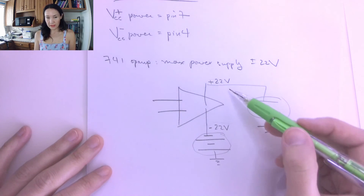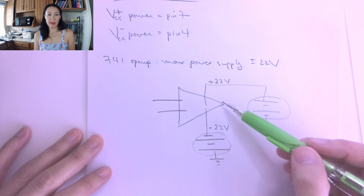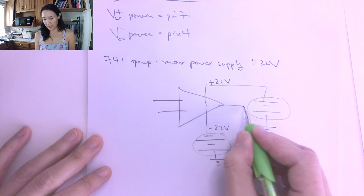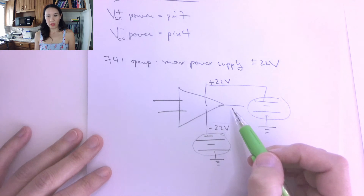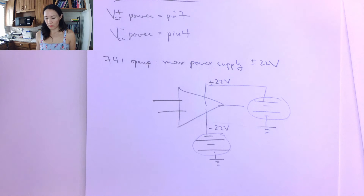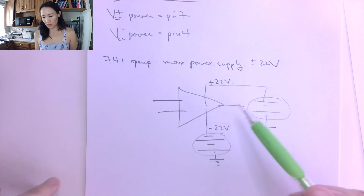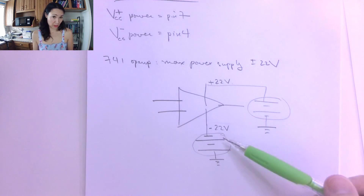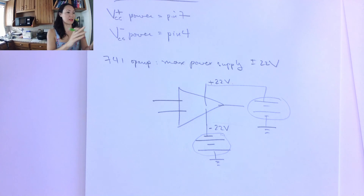The power supply not only turns the op amp on, but it caps the output. If we have some input signal whose amplified output would exceed the supply voltage, our output can be no larger than plus or minus 22 volts. If it tries to go outside that range, we'll be operating in the saturated region — we'll talk more about that later in the module. Usually the supply will be something like plus/minus 15 or plus/minus 10 volts, and it doesn't have to be symmetric. That's a brief introduction to op amps. In the next video, I'll talk about non-ideal op amps and the ideal op amp approximation.